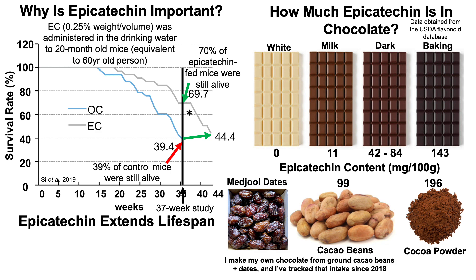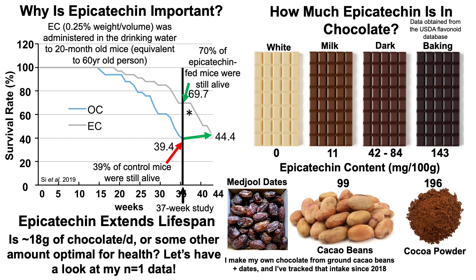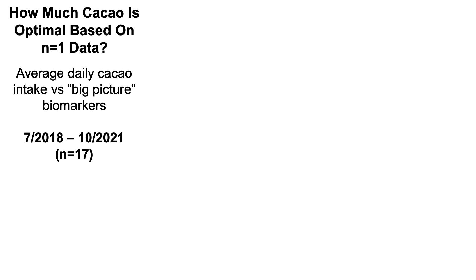The speaker has been tracking macro and micronutrients since 2015 and food intake since July 2018. So with that in mind, is 18 grams of chocolate per week or some other amount optimal for health? That can be assessed by looking at personal N-of-1 data — specifically, how much cocoa is optimal based on three-plus years of daily dietary tracking alongside 17 corresponding blood tests, correlating average daily cocoa bean intake against big-picture biomarkers of overall systemic health.